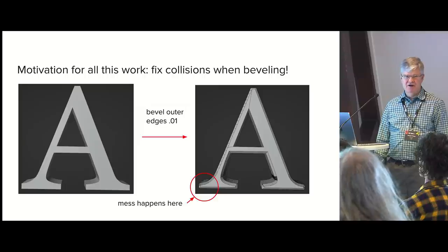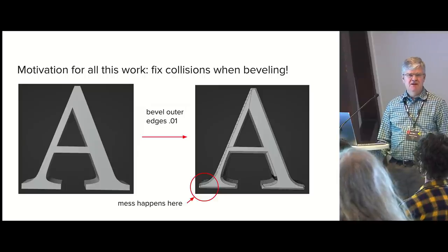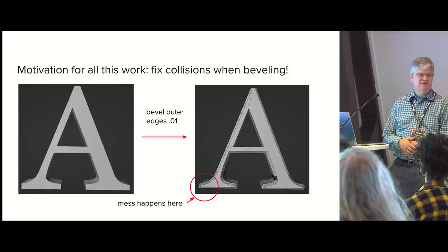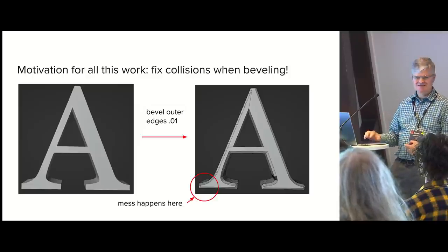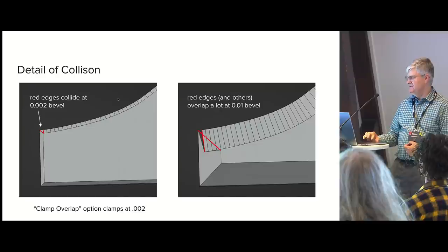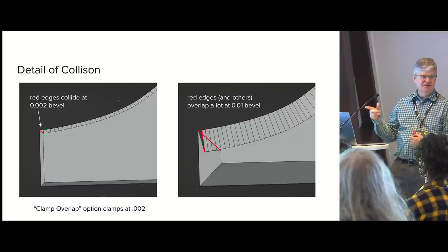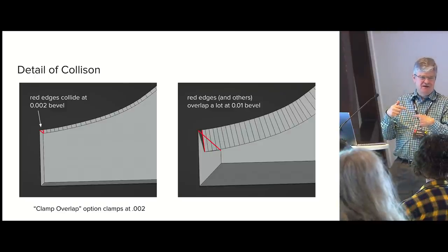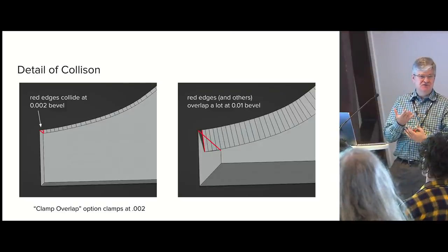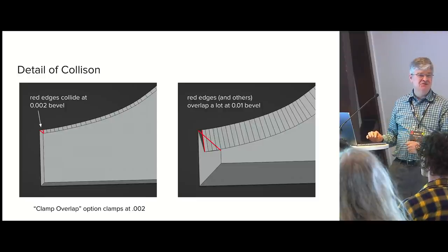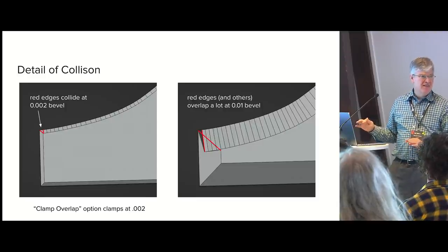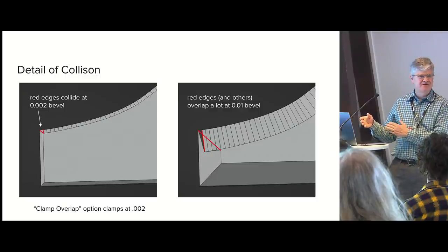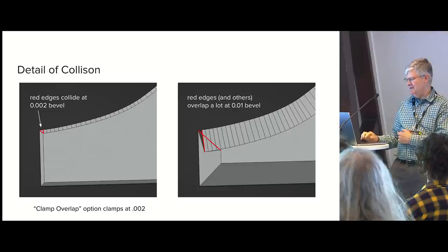Anyone who has used bevel before has certainly run into this problem: if you bevel something like a character with serifs, pretty soon you get a mess. What happens in detail is that because you have a lot of really close points together on the edges of the serif, they soon overlap. Once they've overlapped, you get overlapping triangles, sometimes reverse triangles — a big mess that is unusable in a render. You kind of have to fix it by hand. Normally there's a clamp overlap thing that stops you from going too far, but sometimes you really want to go further. So how do you deal with that?